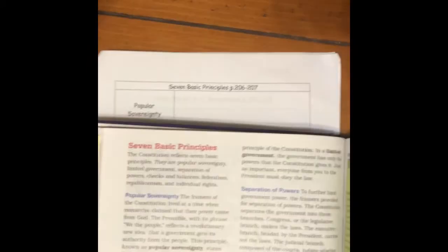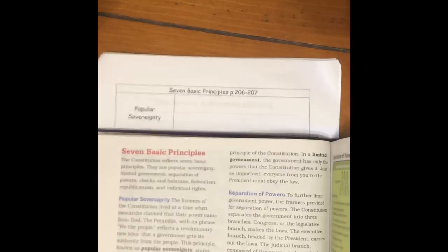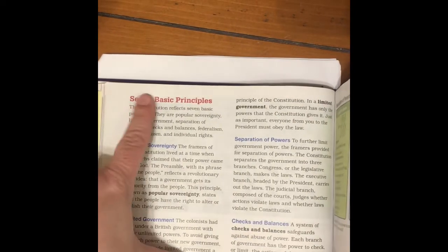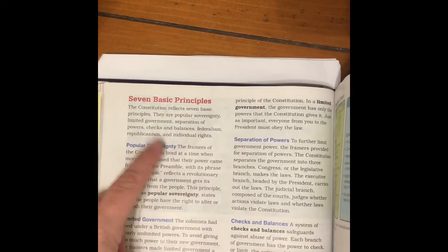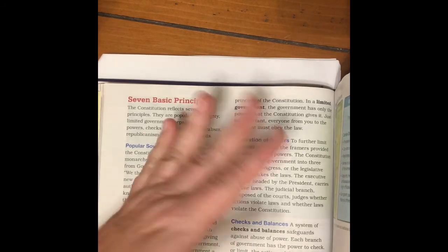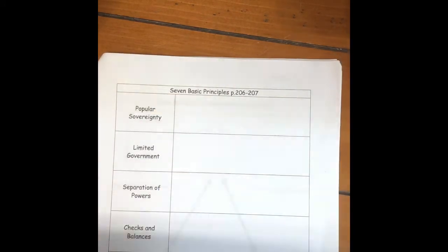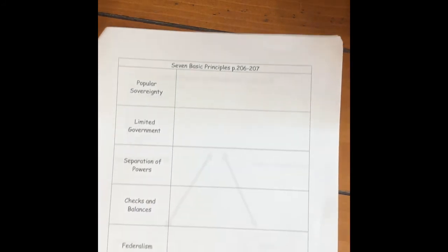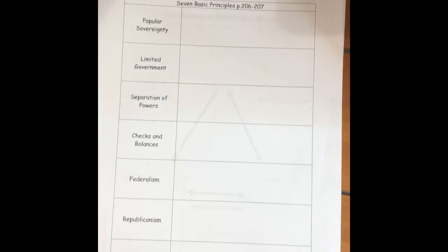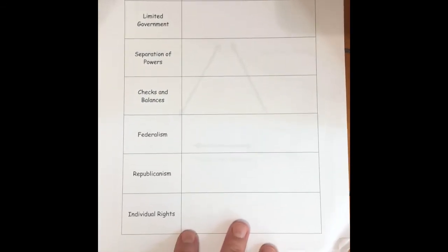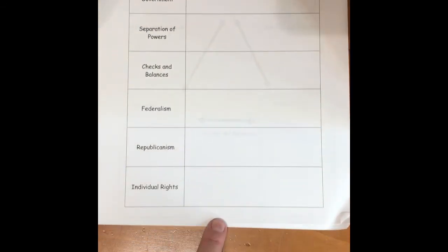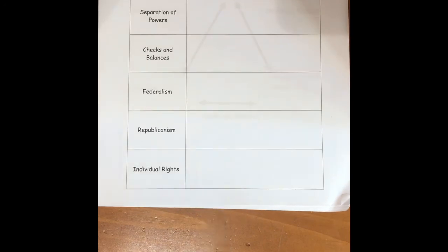The second page is on pages 206 and 207. Read about all those different ideas and summarize them in the table. For example, popular sovereignty is the idea that the people are the ones in charge — kind of like a king and queen would be sovereign, but it is the people in the United States. Limited government, separation of powers, checks and balances, federalism, republicanism, and individual rights — we will continue to take notes on all of those as we go through the study guide.